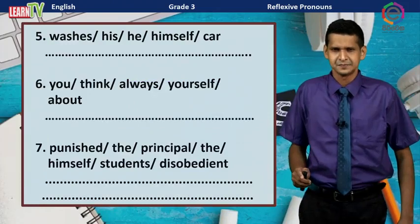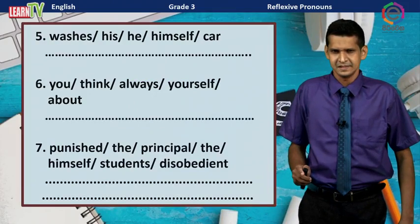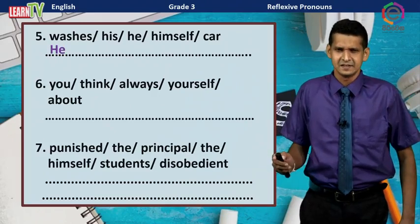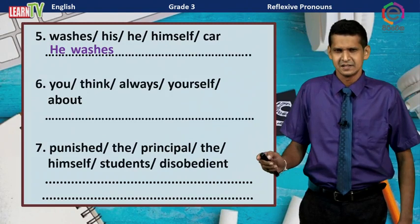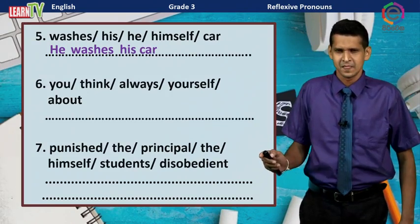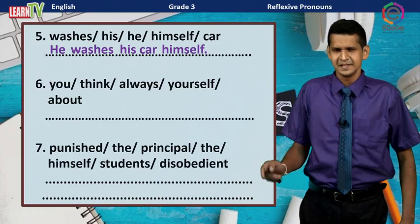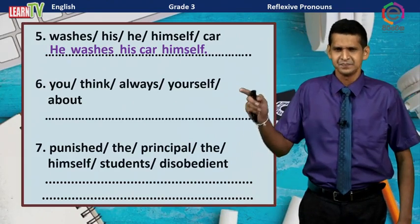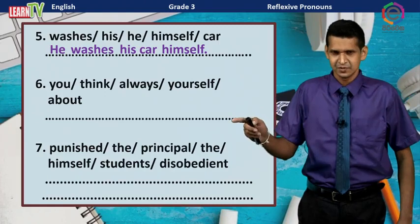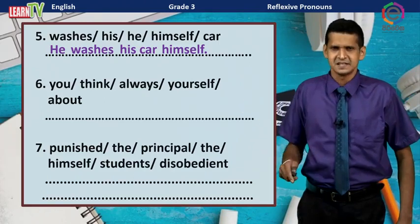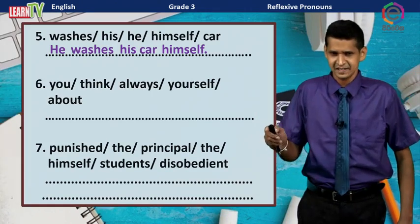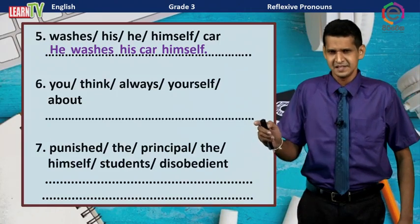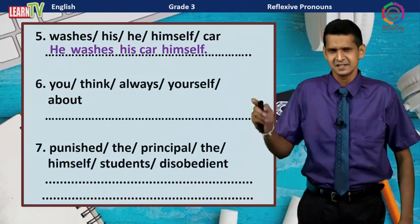Number five: The subject is 'he,' the verb is 'washes,' and the object is 'his car.' The reflexive pronoun 'himself' shows emphasis. The sentence is written in simple present: He washes his car himself.